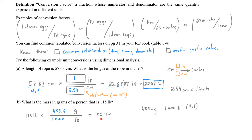We compute this by multiplying 115 by 453.6 grams and dividing by one. The calculated value is 52164. For significant figures: the first term has 3 sig figs and the conversion factor has 4 sig figs, so our answer needs to be rounded to 3 significant figures. Looking to the right of the third significant figure, we see a 6, so we round up, giving us 52200 grams.